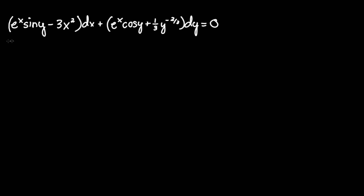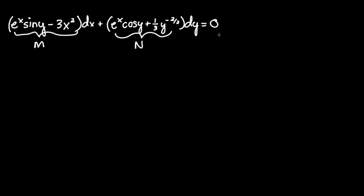We can tell this is an exact equation. Let's deem the first term, the term in front of dx, to be M, and the second term in front of dy to be N. To prove this is an exact equation, we must first prove that the partial derivative of M with respect to y is equal to the partial derivative of N with respect to x. Proving that they are equal will thereby prove that this is an exact equation.